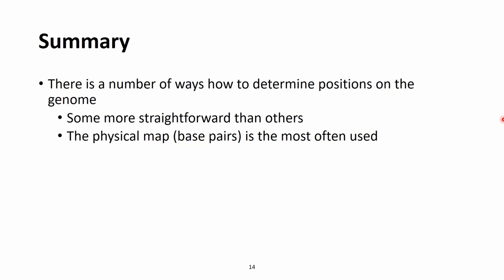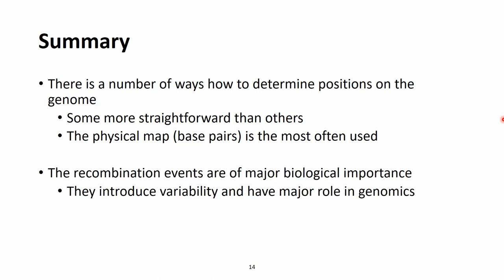We spoke about different ways to determine positions on the genome. Some are more straightforward than others, with the physical map in base pair positions being the one more often used. We also talked about recombination events, which have major biological importance — they introduce variability and have a major role in genomics.